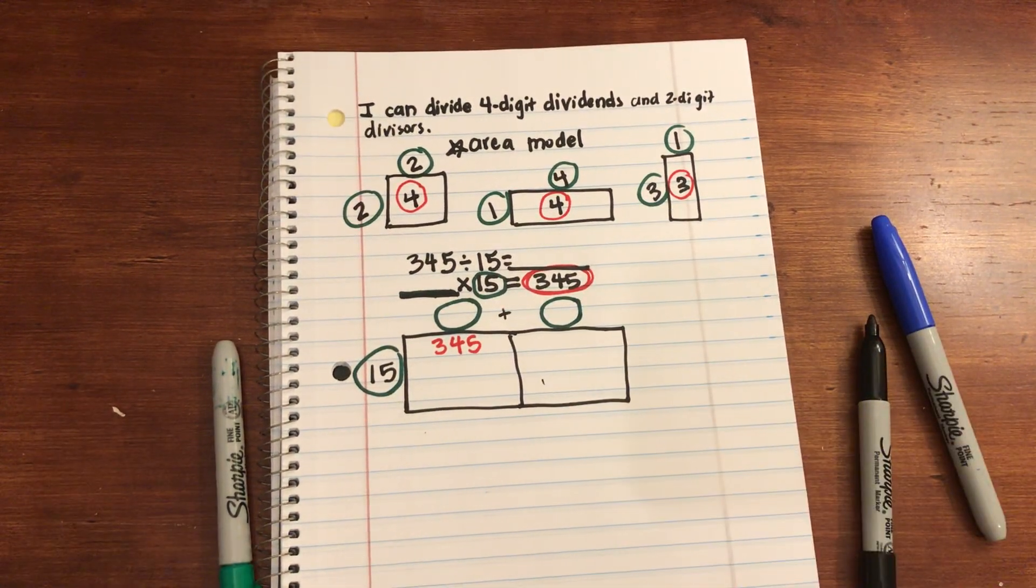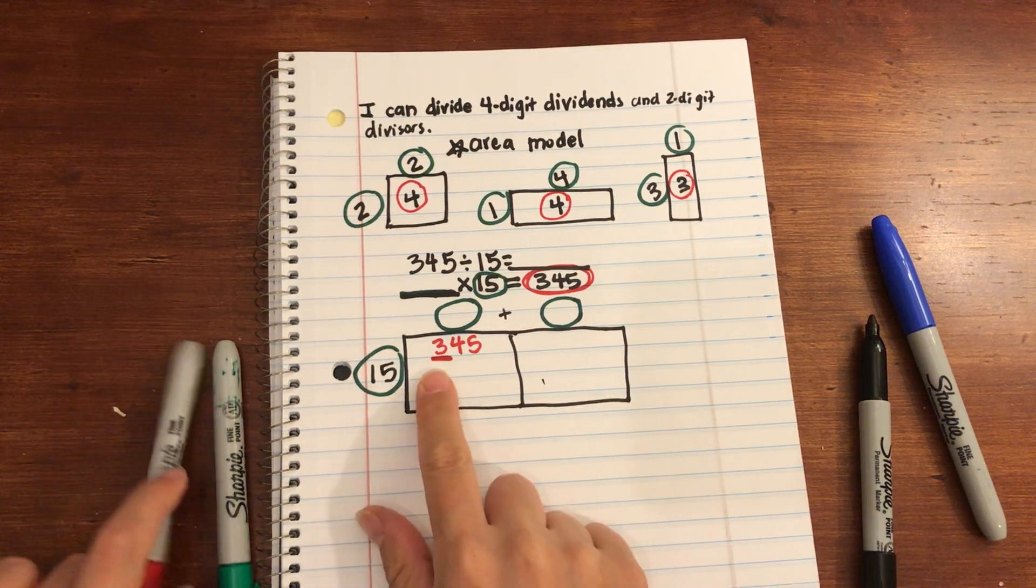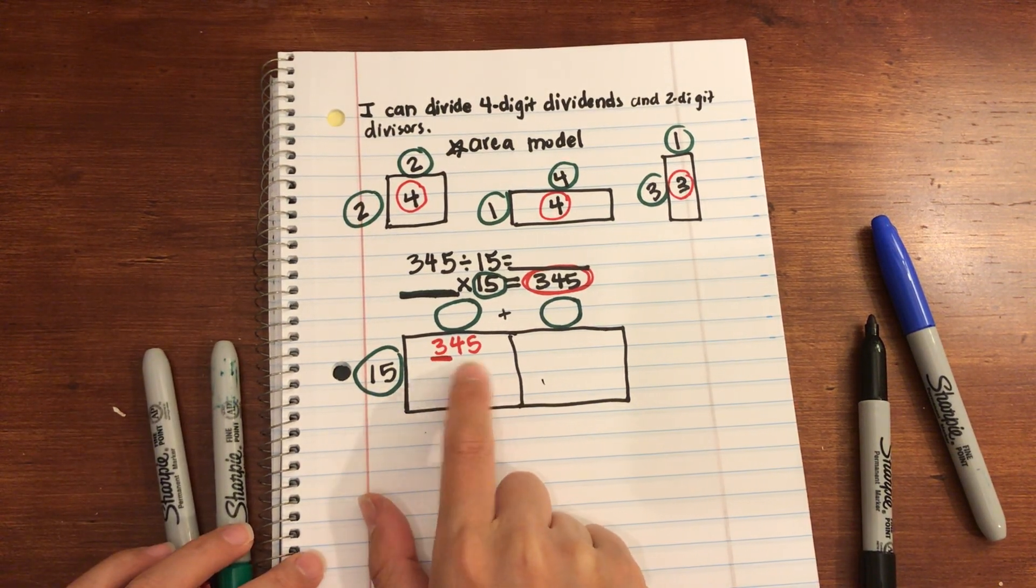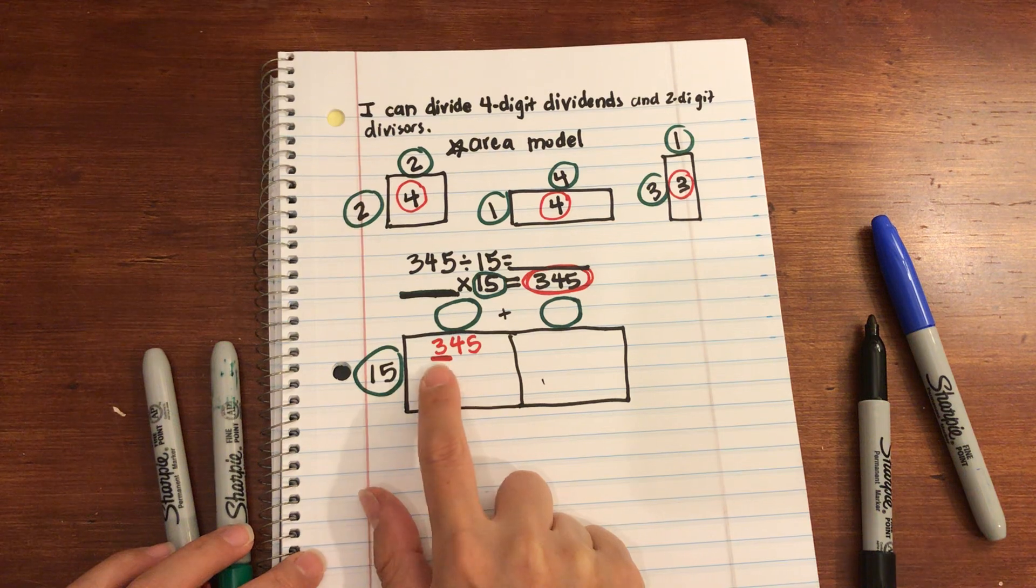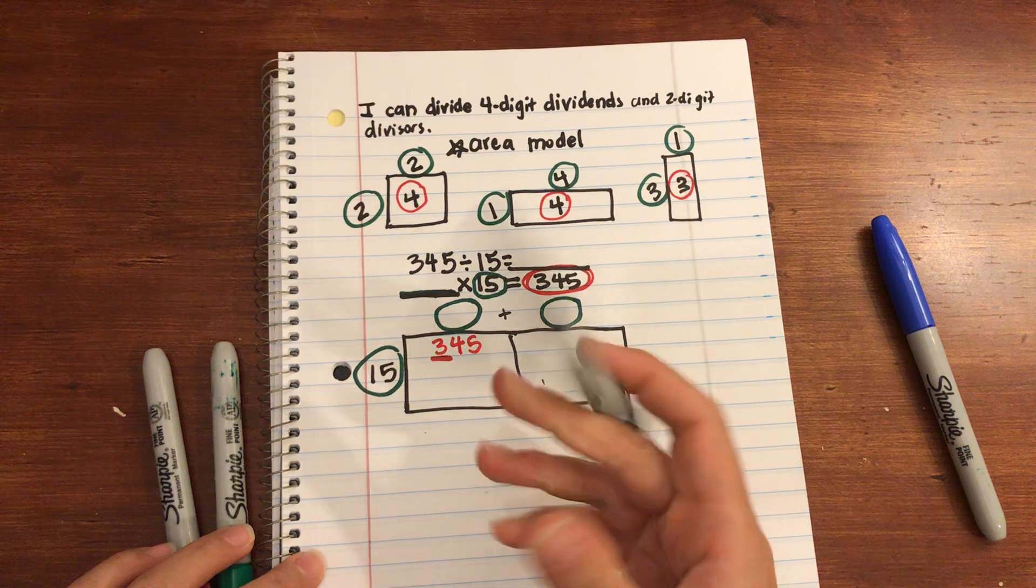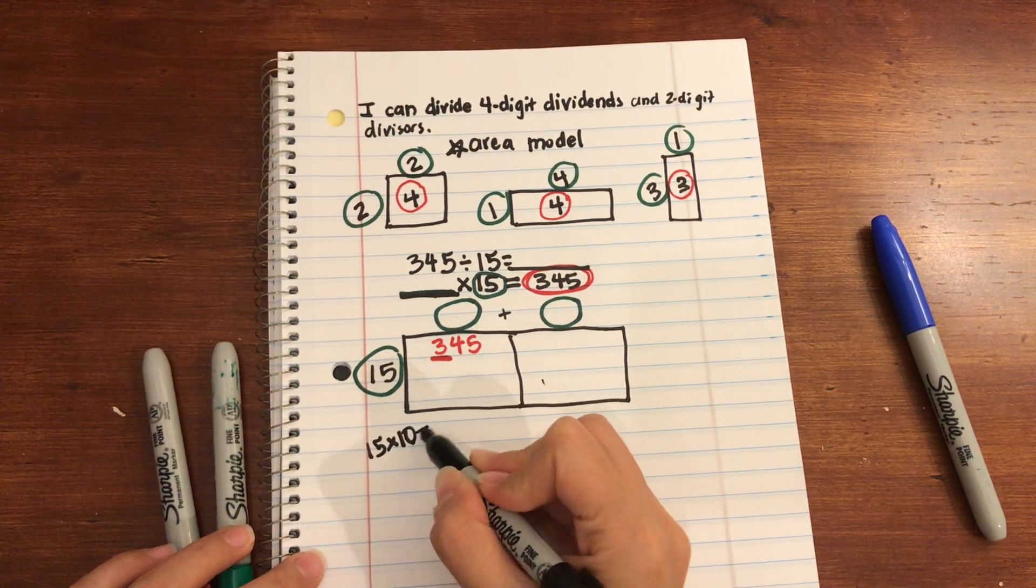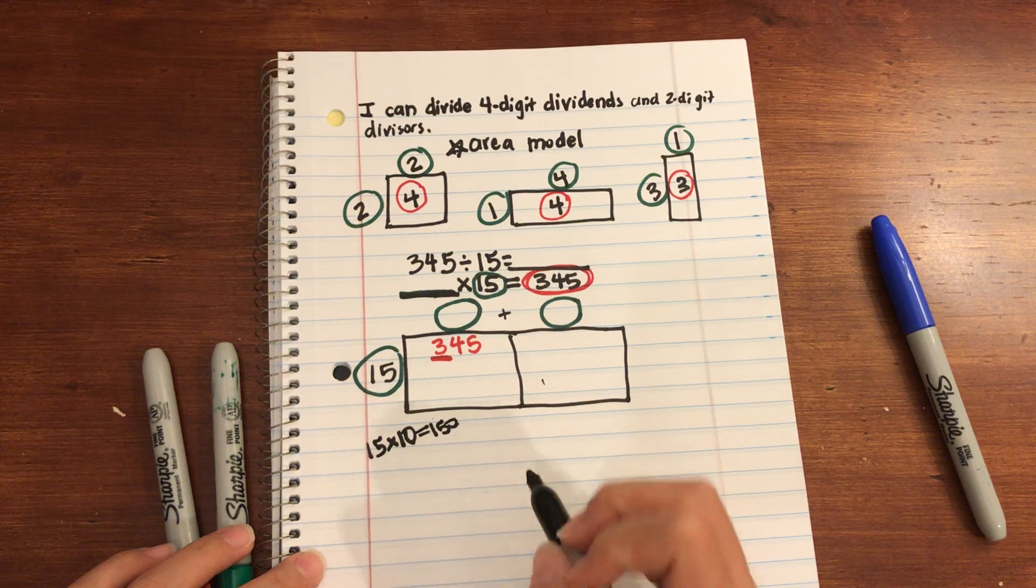So 15 groups, or how many groups of 15 can go into, we always try to look at that first digit right here as 300, because the 3 is in the hundreds place. So how many groups of 15 go into 300? I always like to start off with my groups of 10, because they're very easy to manipulate. You're just adding on the zero to the original factor.